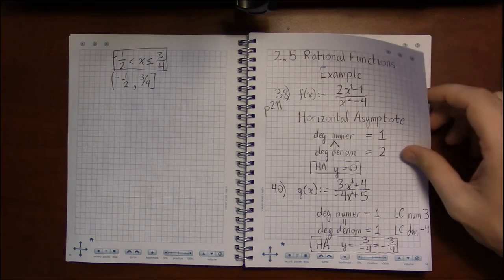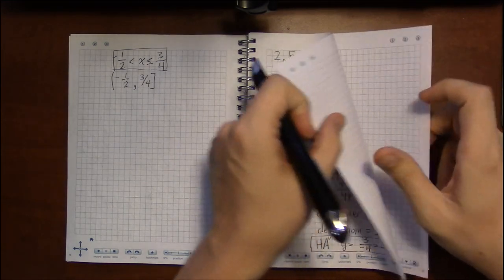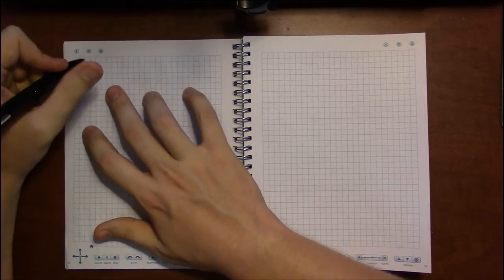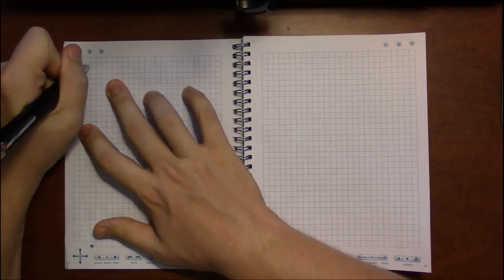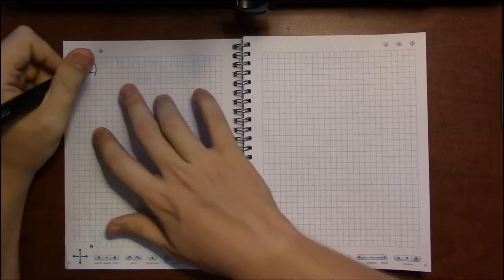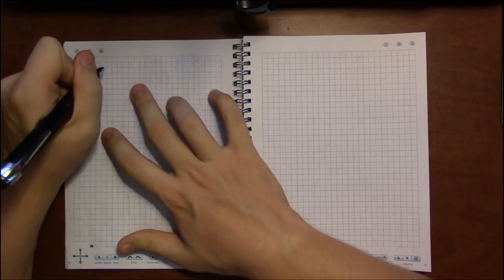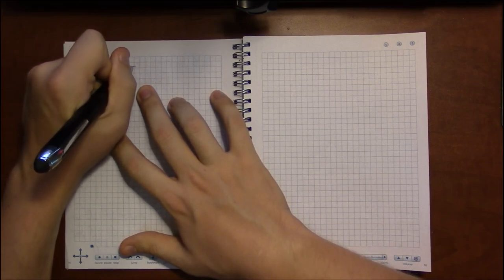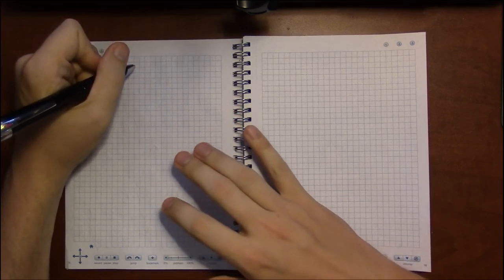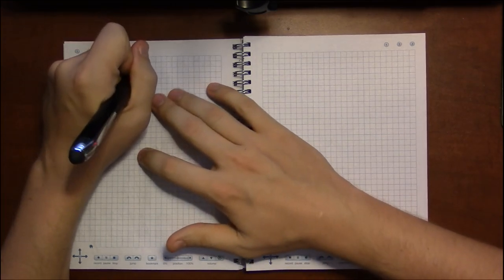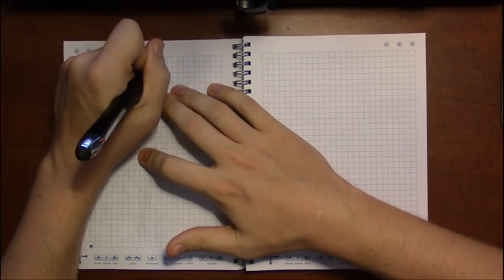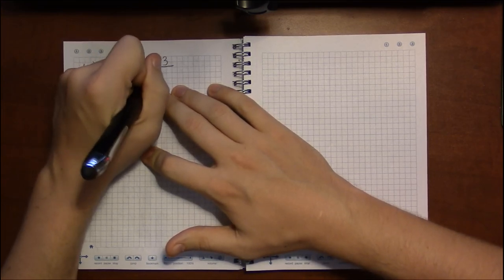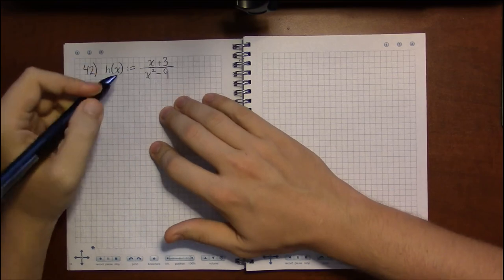Okay, let's take a look at one more. Let's look at number 42. Where we've got h of x being defined as x plus 3 over x squared minus 9.